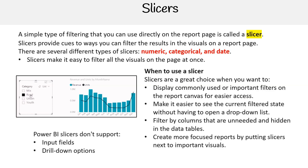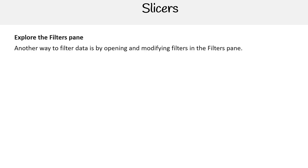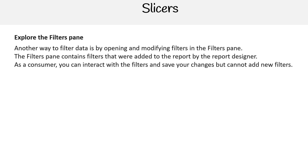Note that Power BI slicers don't support input fields and drill-down options. Another way to filter data is by opening and modifying filters in the filters pane. The filters pane contains filters that were added to the report by the report designer. As a consumer, you can interact with the filters and save your changes, but cannot add new filters.